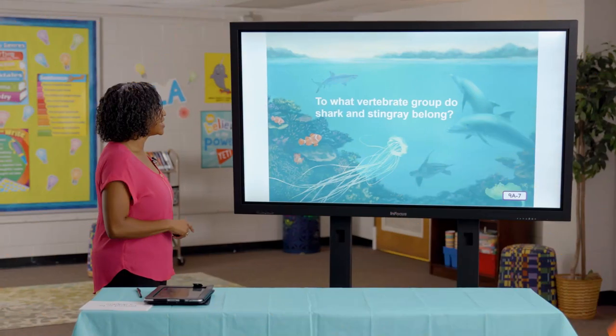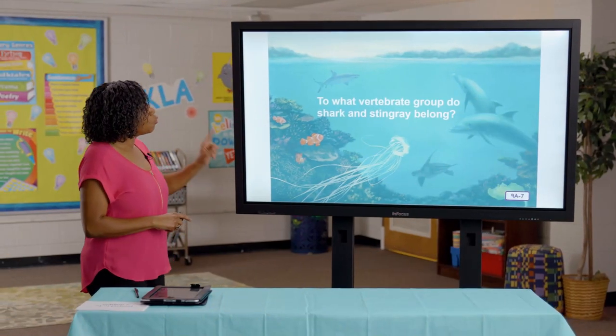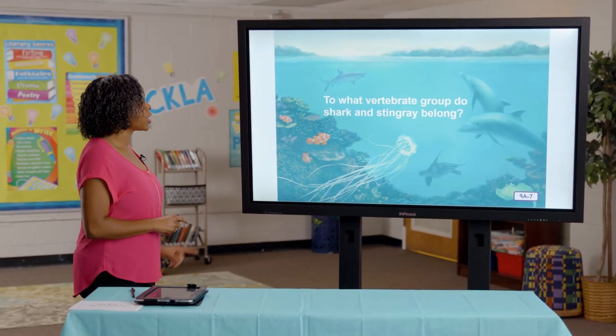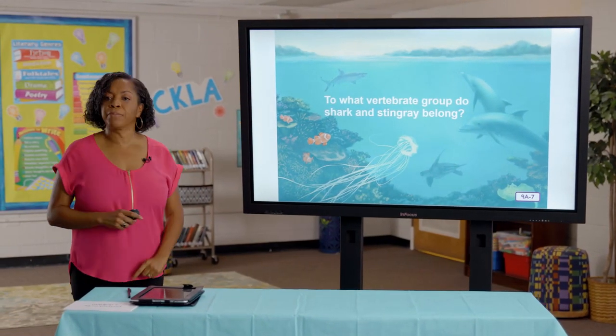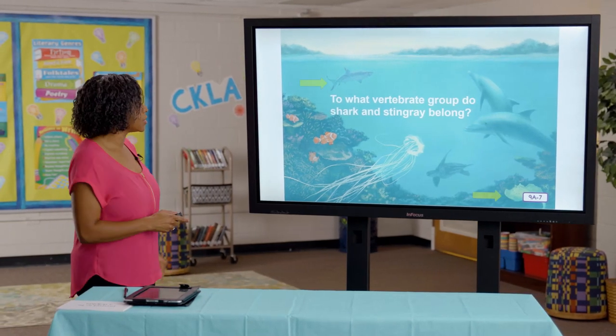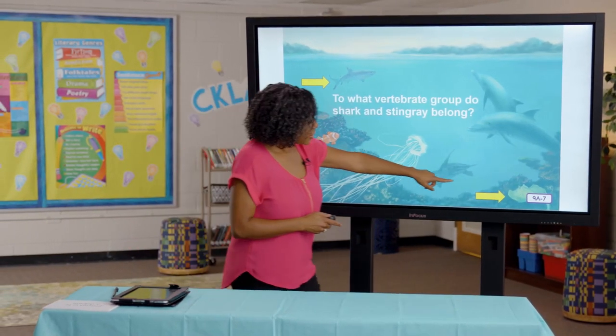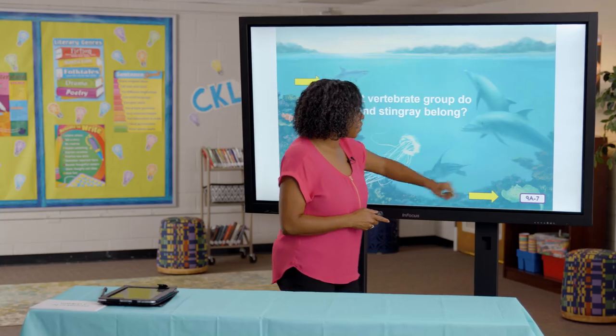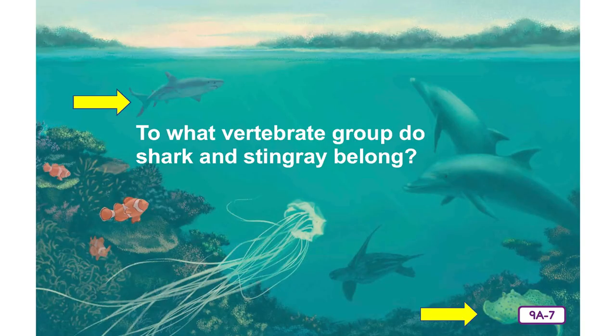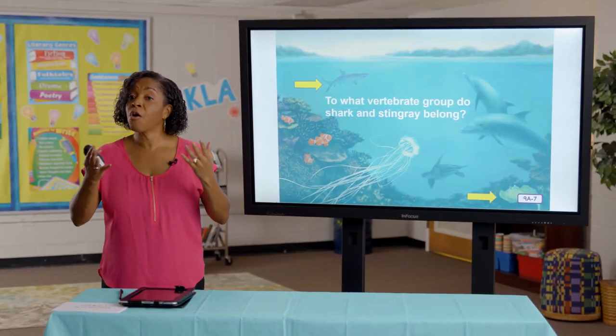Third comprehension question: To what vertebrate group do the shark and stingray belong? If you said the fish group, you are correct, because we know that they are fish because they have gills and they live in the water — they are aquatic.